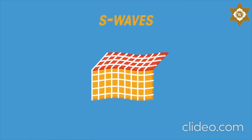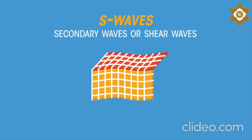S waves. These slower waves arrive after the P waves and so are called secondary waves or shear waves. S waves cause an up and down motion. They travel through solid but not liquid.